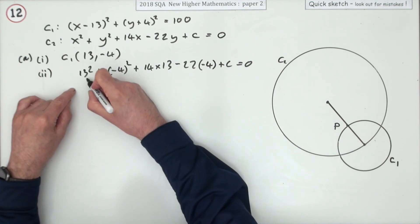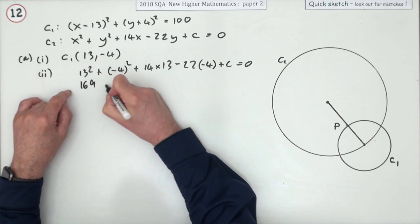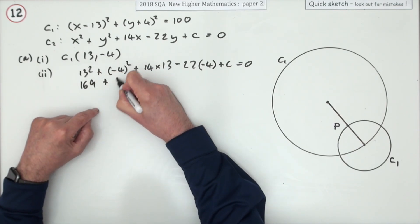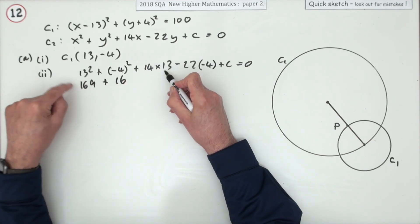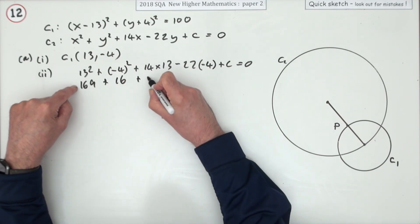I better show some more arithmetic. 13 squared is 169, negative 4 squared is plus 16, 13 times 14 is just one more 13 from 13 squared, so that'll be plus 182.